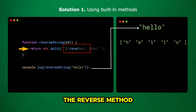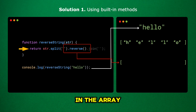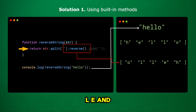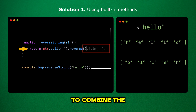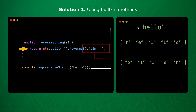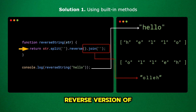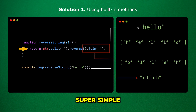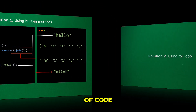Next, we use the reverse method. This reverses the order of elements in the array, so now we have ['O', 'L', 'L', 'E', 'H']. Finally, we use the join method to combine the array elements back into a single string. The result is 'OLLEH', which is the reversed version of our original string. This method is super simple and gets the job done in just one line of code.